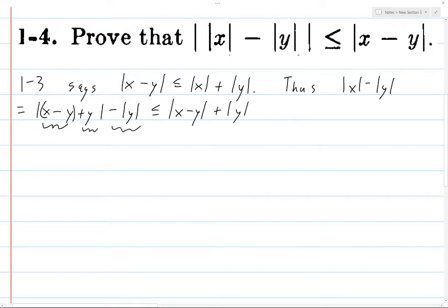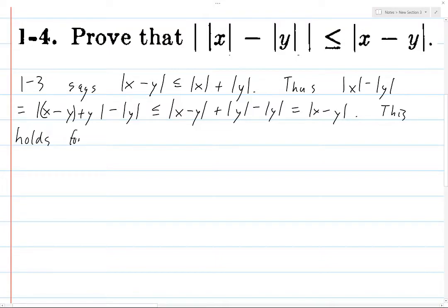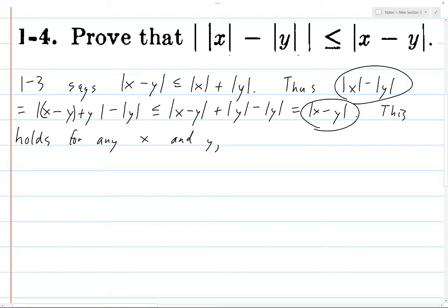But then we've got this part over here and we need to include that. But this is just equal to the norm of x minus y. This holds for any x and y — this inequality, this thing being less than or equal to this thing. We just proved that in general for any x and y.